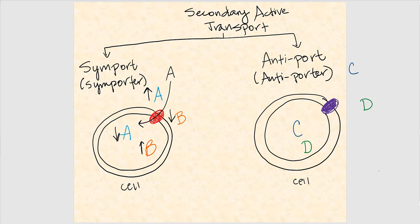Now for B, we're going to move it against its concentration gradient, from low to high. So we're moving B from low to high — this is active transport. This is secondary active transport: a combination of diffusion and active transport built into one. The reason this is called symport is because we're moving two substances in the same direction — we're moving A inside the cell and simultaneously moving B also inside the cell.